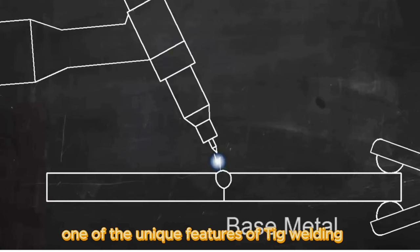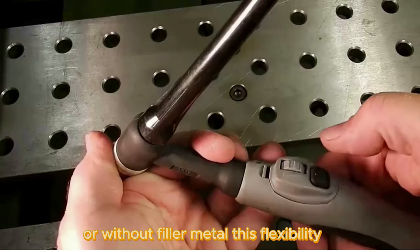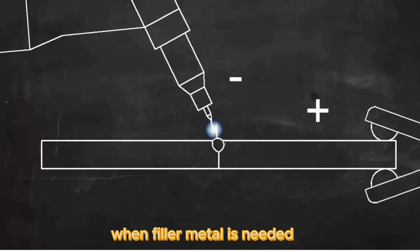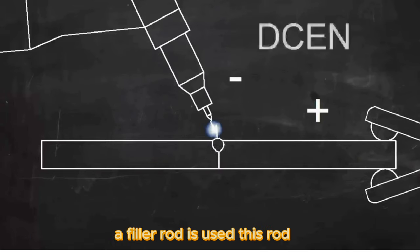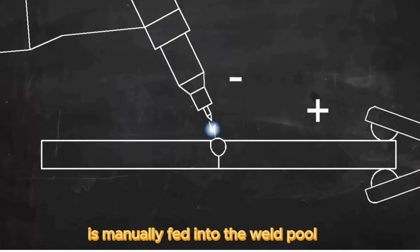One of the unique features of TIG welding is the ability to weld with or without filler metal. This flexibility is not commonly found in other welding processes. When filler metal is needed, a filler rod is used. This rod, made from a specific alloy, is manually fed into the weld pool.